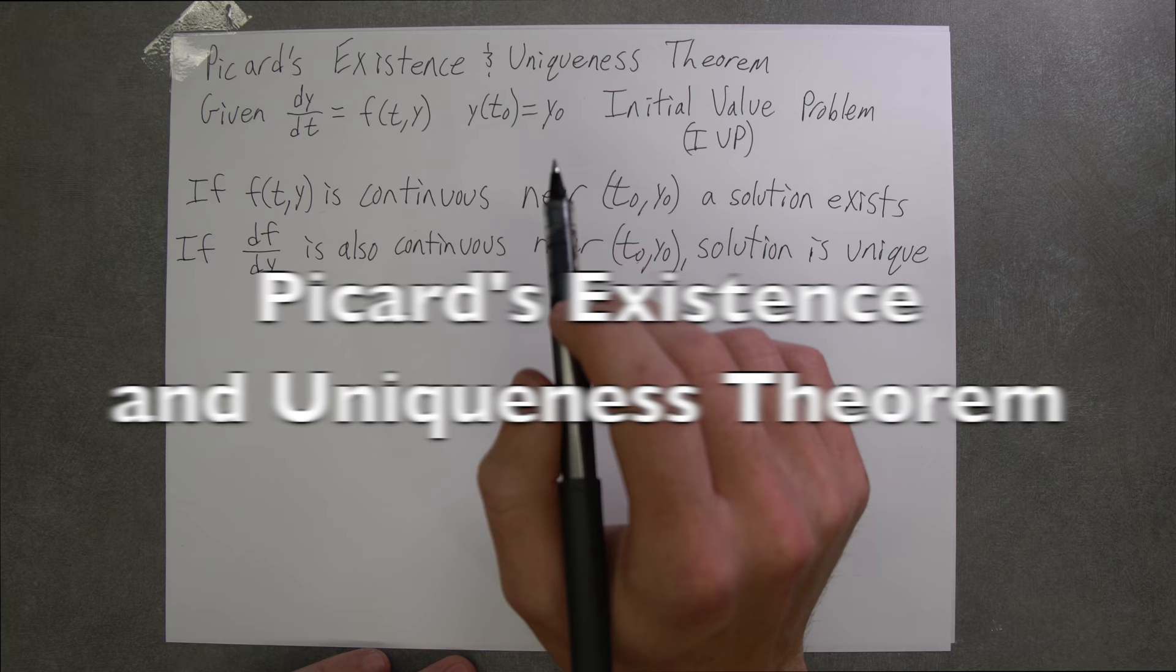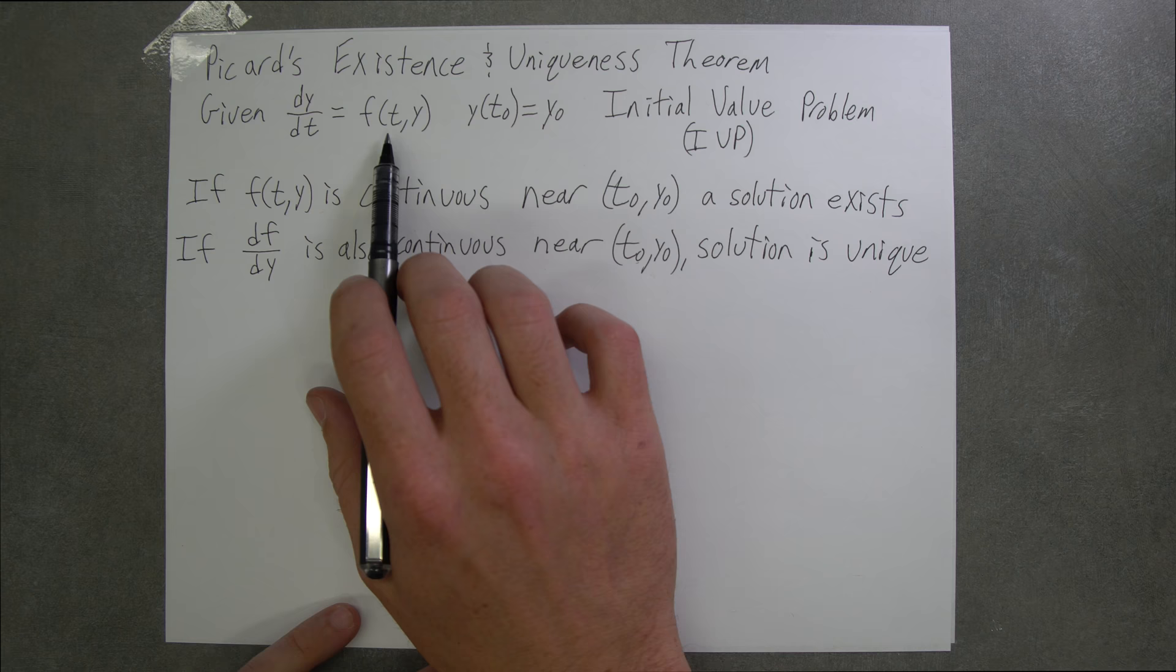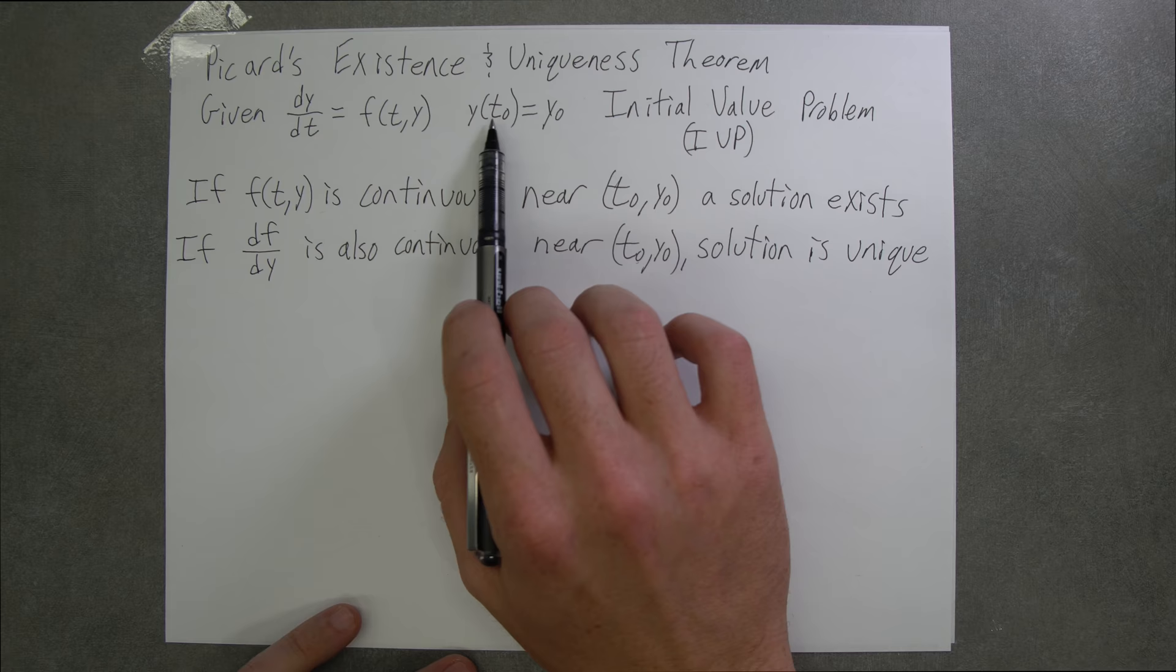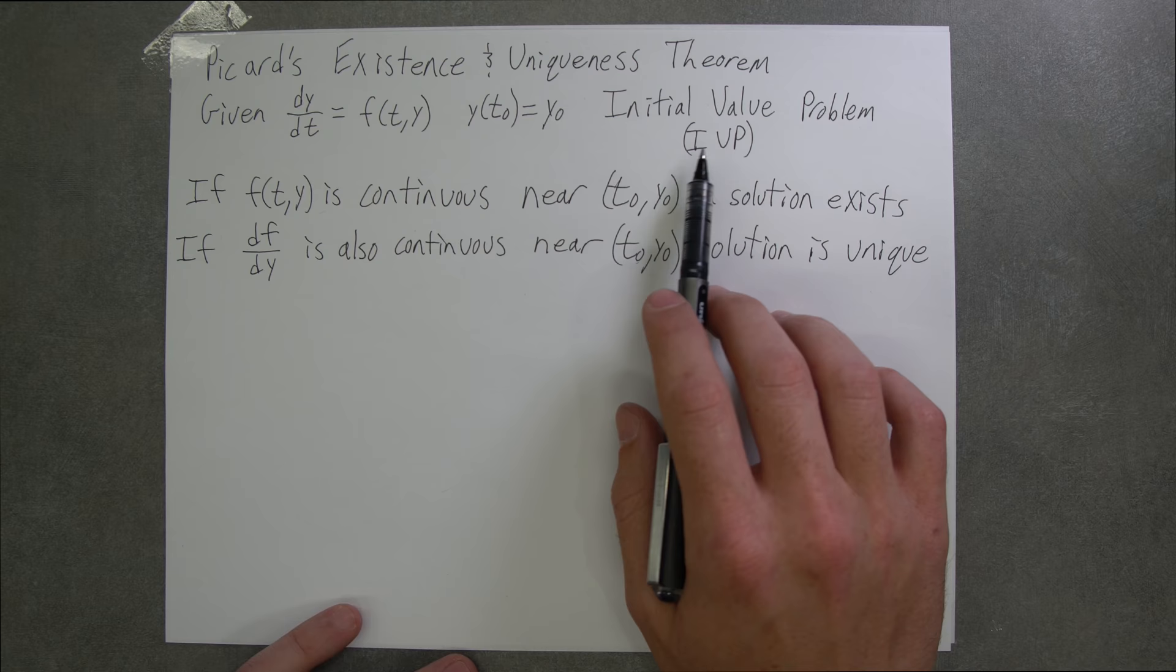Picard's Existence and Uniqueness Theorem states that given a differential equation in the form dy/dt equals f(t,y), and an initial condition y(t0) equals y0, this is known as an initial value problem or IVP.